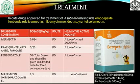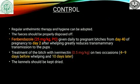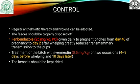For control, we should maintain a proper deworming schedule for the animal, feces should be disposed of properly, and kennels should be kept dry and clean. Transmammary transmission can be prevented by fenbendazole at 25 mg per kg body weight orally, given to pregnant bitches from day 40 of pregnancy to 2 days after whelping. Treatment of bitches with ivermectin at 0.5 mg per kg body weight on two occasions — from 4 to 9 days before whelping and 10 days later — is also recommended.